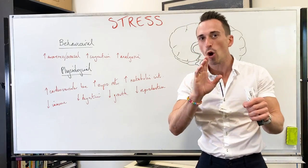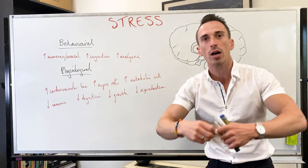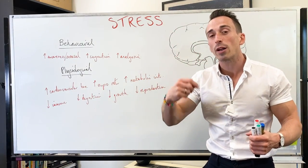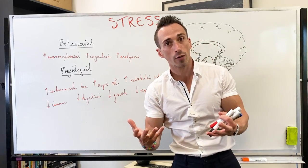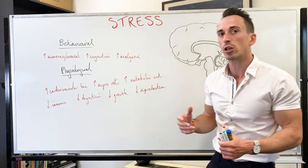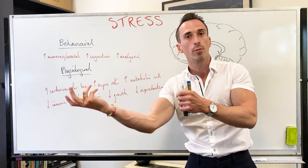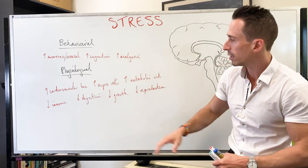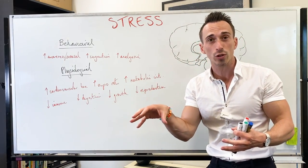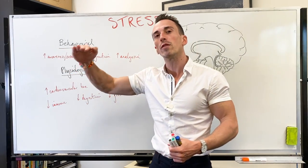If we increase cardiovascular tone, we're increasing blood pressure and blood being pushed around the body, and we're increasing respiratory rate as well. These two things working together help to increase the amount of oxygen and nutrients being delivered to important tissues of the body. Increasing metabolic intermediates — most predominantly glucose — will be mobilized from the liver into the bloodstream, giving us an available energy source. Decreases in immune function redirect our resources to other parts of the body that may need it, like muscles. So we decrease immune function in that moment.